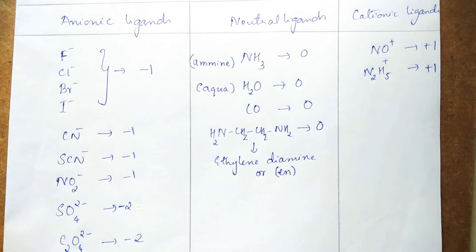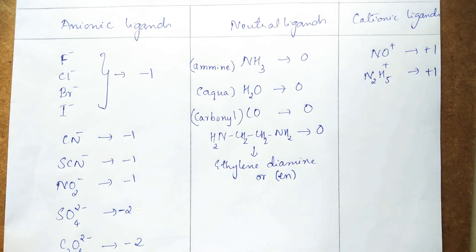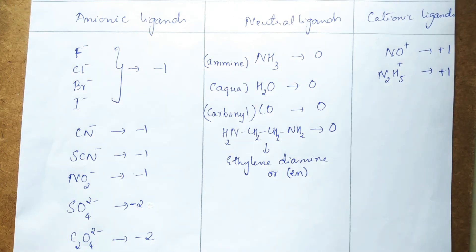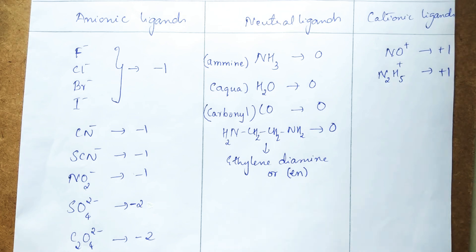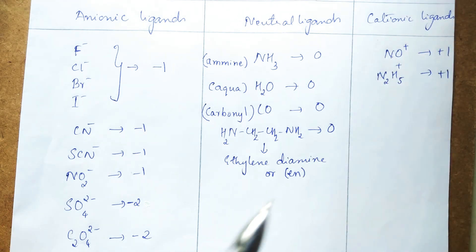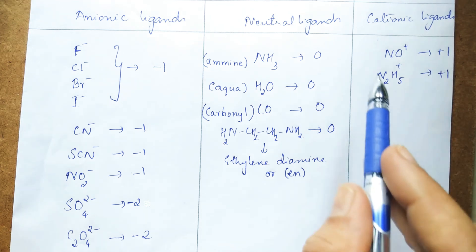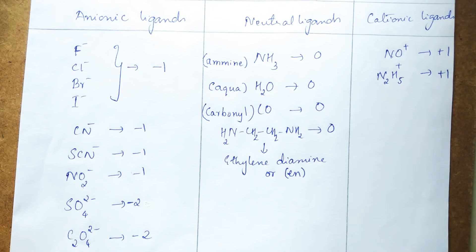There is one more neutral ligand: NH₂CH₂CH₂NH₂, which is ethylene diamine, with zero charge. In coordination complex formulas, ethylene diamine is usually represented as 'en'. Cationic ligands are not so common, but we have two examples: NO⁺ (nitrosonium ion) with a charge of plus one, and N₂H₅⁺ (hydrazenium ion) also with a charge of plus one.